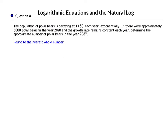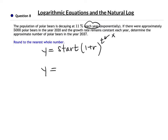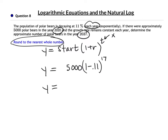Here we're modeling a population and solving with logarithms. This is a normal exponential equation: y equals start times (1 plus r) to the power of t — annually, so no division needed. It's decaying, so it's 1 minus 0.11, or 0.89. The time is from 2020 to 2037 — that's 17 years — to the power of 17. Starting with 5,000. We don't even need logs here; just compute 5,000 times 0.89 to the 17th. Rounded to the nearest whole number: 690 bears.